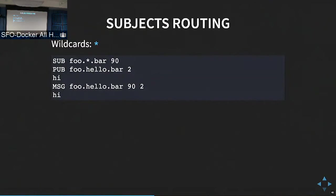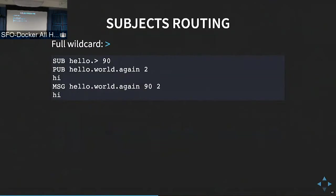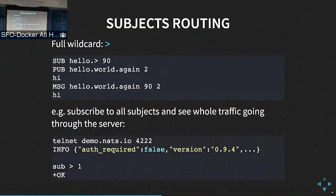NATS has subject routing functionality. You can use an asterisk to match on a dot-separated subject namespace. For example, 'foo.*' would match 'foo.hello'. By convention, all clients use '_INBOX' prefixes. You can subscribe to all requests happening inside the server using the wildcard. There is also a full wildcard that matches any messages happening inside the server — if you try this on the demo endpoint, you'll see all the JSON payloads that other clients are sending.